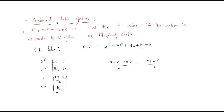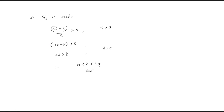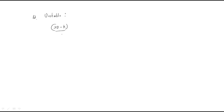For condition B — the system is unstable — there must be a sign change in the first column. For a sign change to occur, (32 − k)/8 must be negative or k must be negative. So the conditions are: (32 − k)/8 < 0, which gives 32 − k < 0, meaning k > 32; or k < 0.